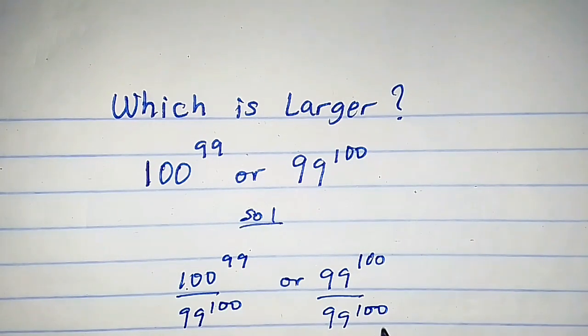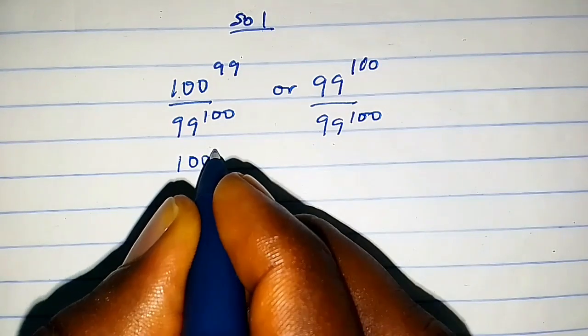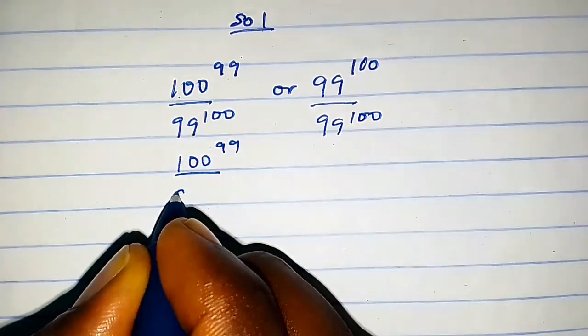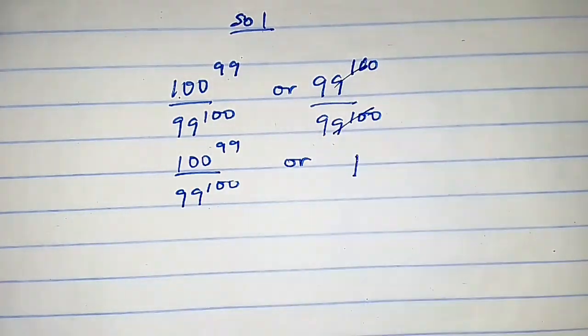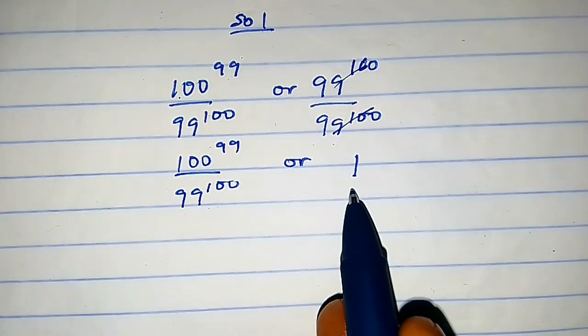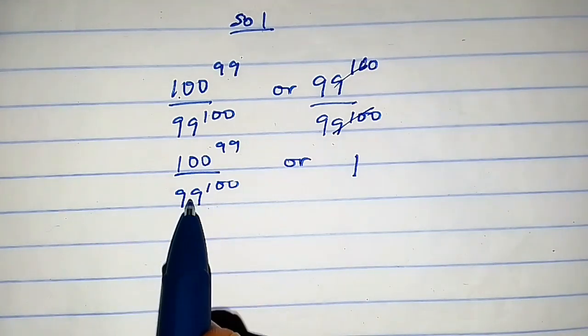After dividing, we clearly have 100^99/99^100 compared to 1. The right side equals 1, so we don't have any issue with that. Let's consider the left-hand side.